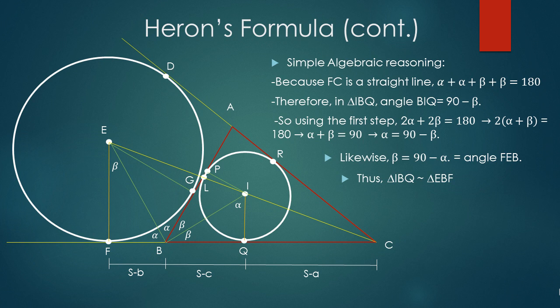In the same fashion, we can prove that angle FEB equals beta as well. This concludes that triangle IBQ and triangle EBF are similar.